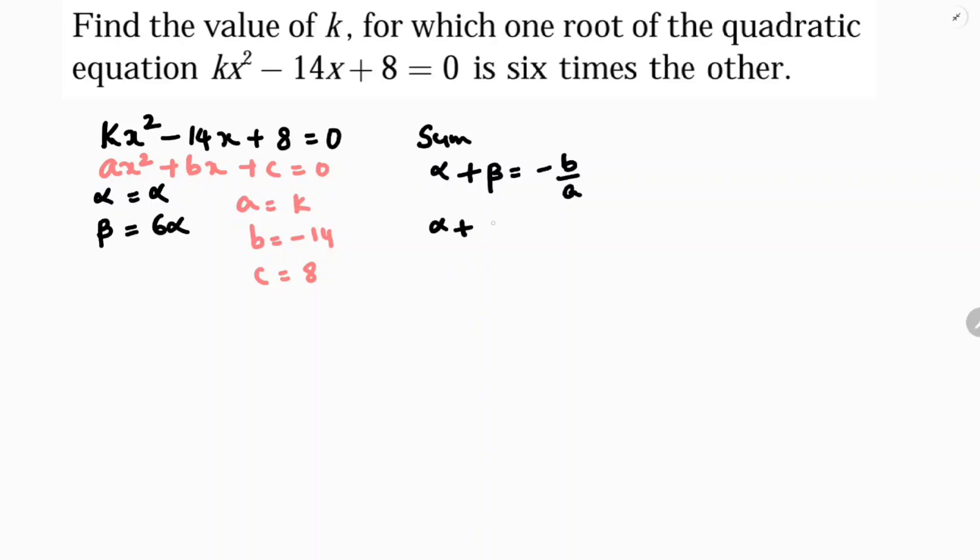Alpha is alpha, beta is 6 alpha. -b/a is -(-14)/k. So 7 alpha equals 14/k.